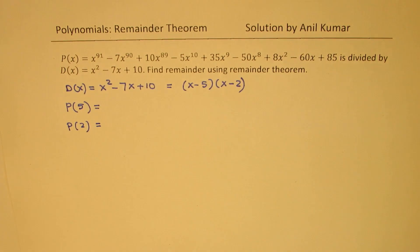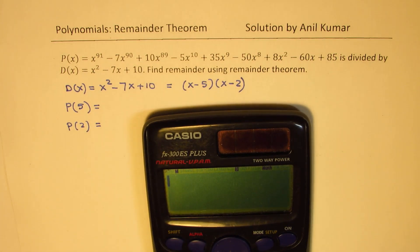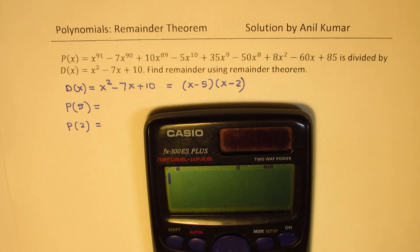So let's use calculator to figure this out. So I'll substitute 5 for x and then find its value. That will be the remainder. So we have 5 to the power of 91, and then we have minus 7 times 5 to the power of 90.